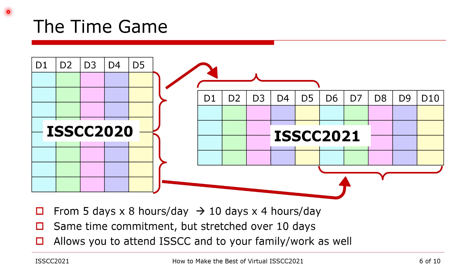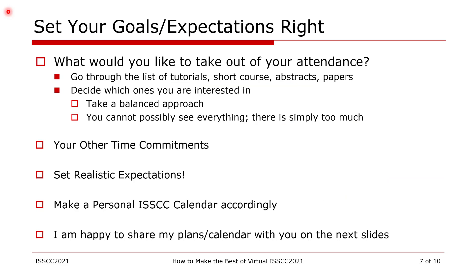With this format, you can split your time between personal life, work, and the conference. If you are attending ISCCC this year, you need to set your goals and expectations of your attendance early, and you need to set them right. You need to ask yourself what you would like to get out of your attendance. Go through the advanced program and decide which material you would like to see and in what order. Remember, technically speaking, you can watch all the tutorials, short course, all 200 papers, and all the forum talks, but choose according to your interest, time availability, and other commitments. Set realistic expectations and make a personal ISCCC calendar accordingly.